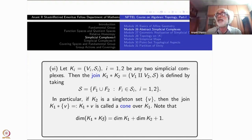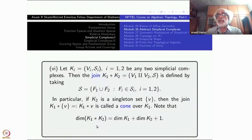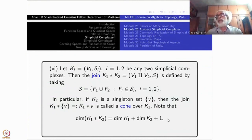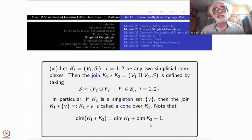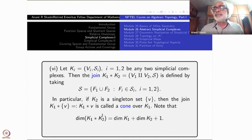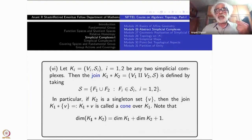The dimension of the join is at least this much, and also equal because any simplex in the join is a disjoint union of two things. Its dimension must be dimension of one part plus dimension of the other part plus 1. For example, a vertex in K₁ and a vertex in K₂ are each 0-dimensional, but their join F₁ ∪ F₂ becomes one-dimensional: 0 + 0 + 1. So you can verify this identity simplex-wise.